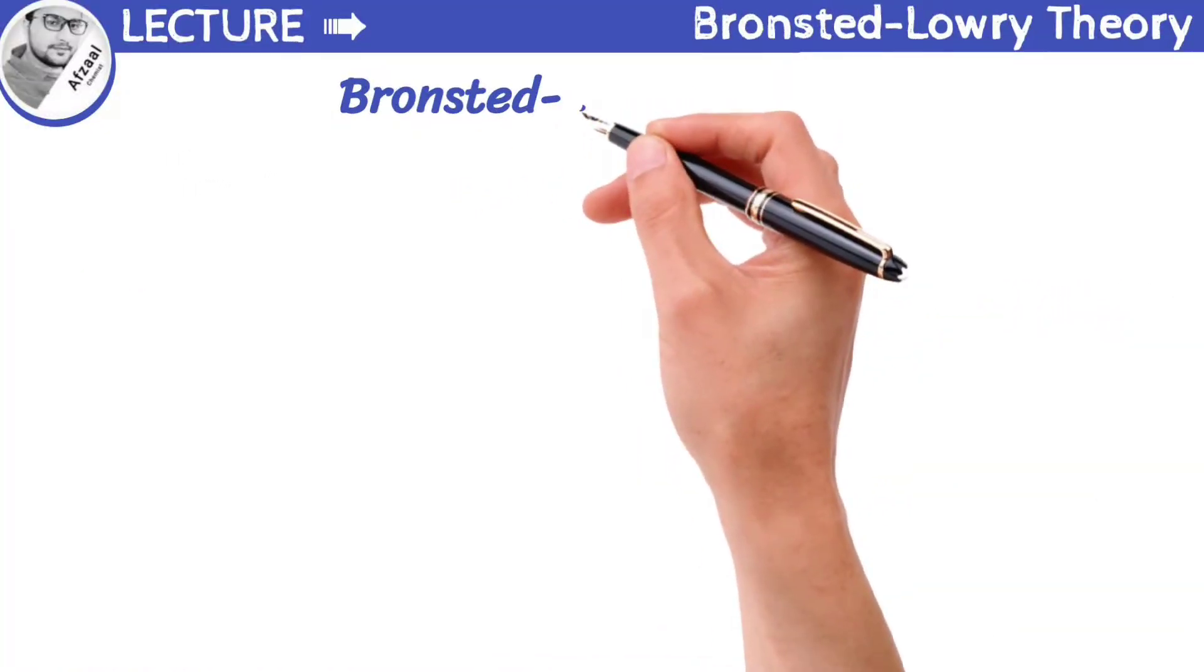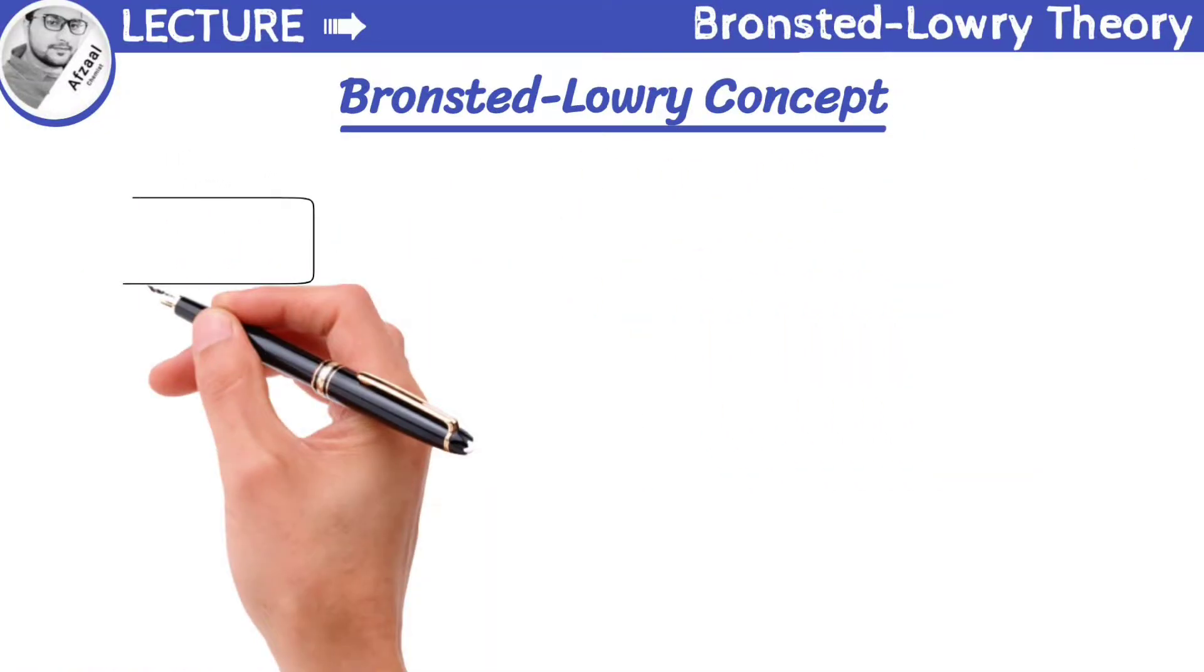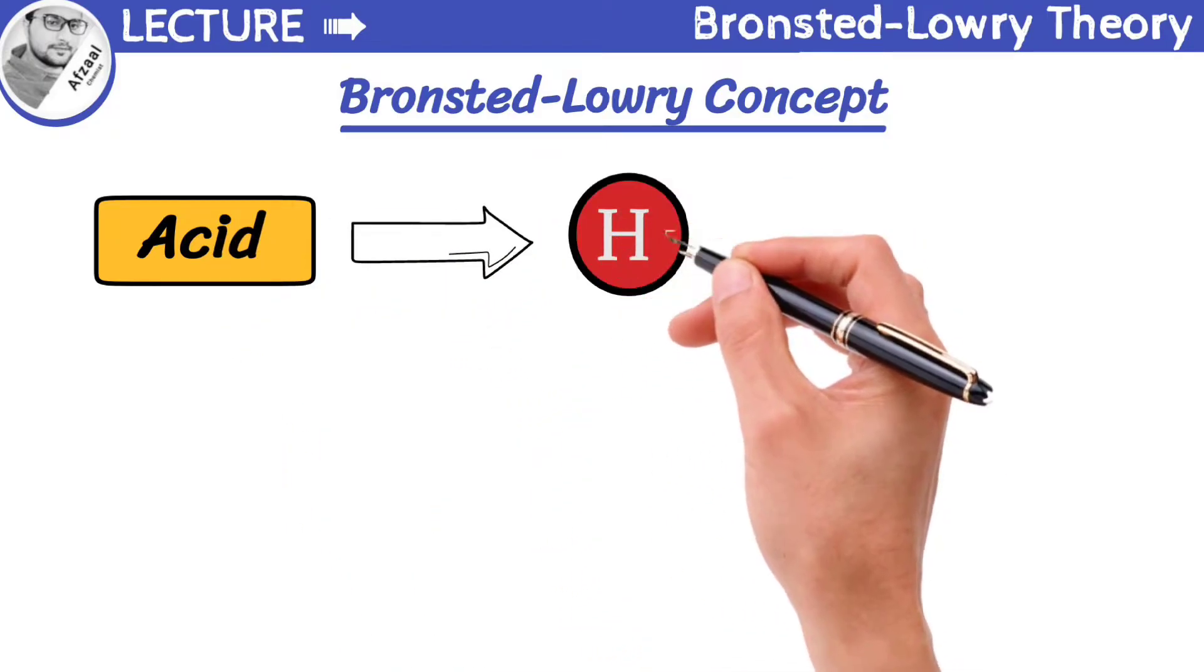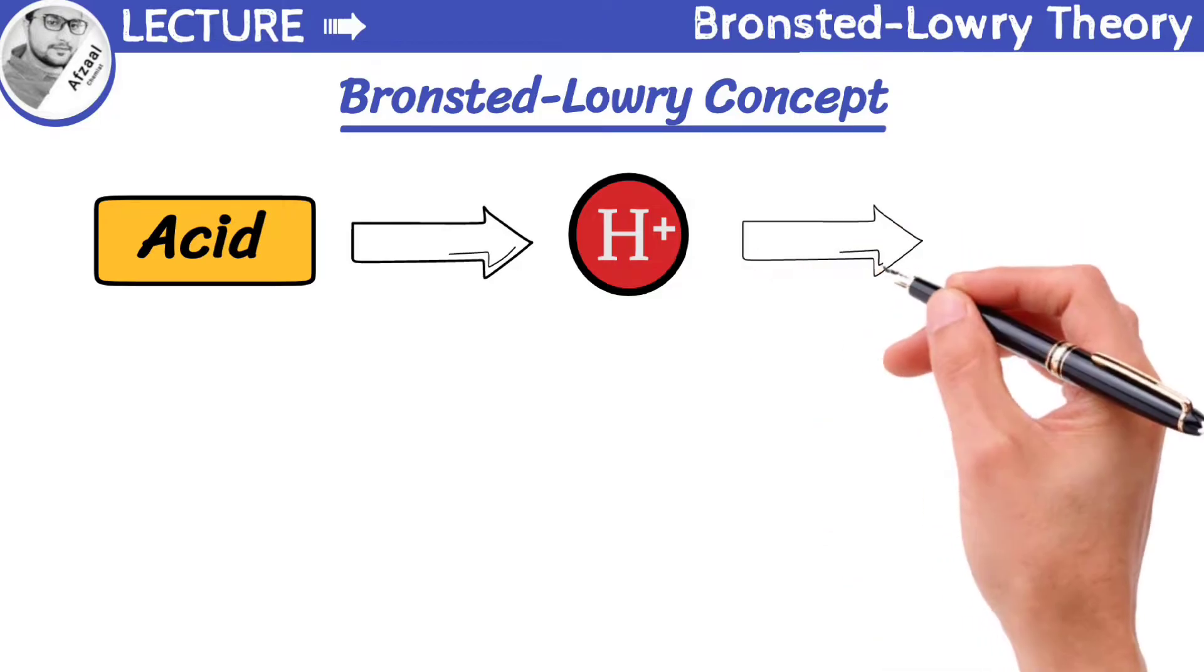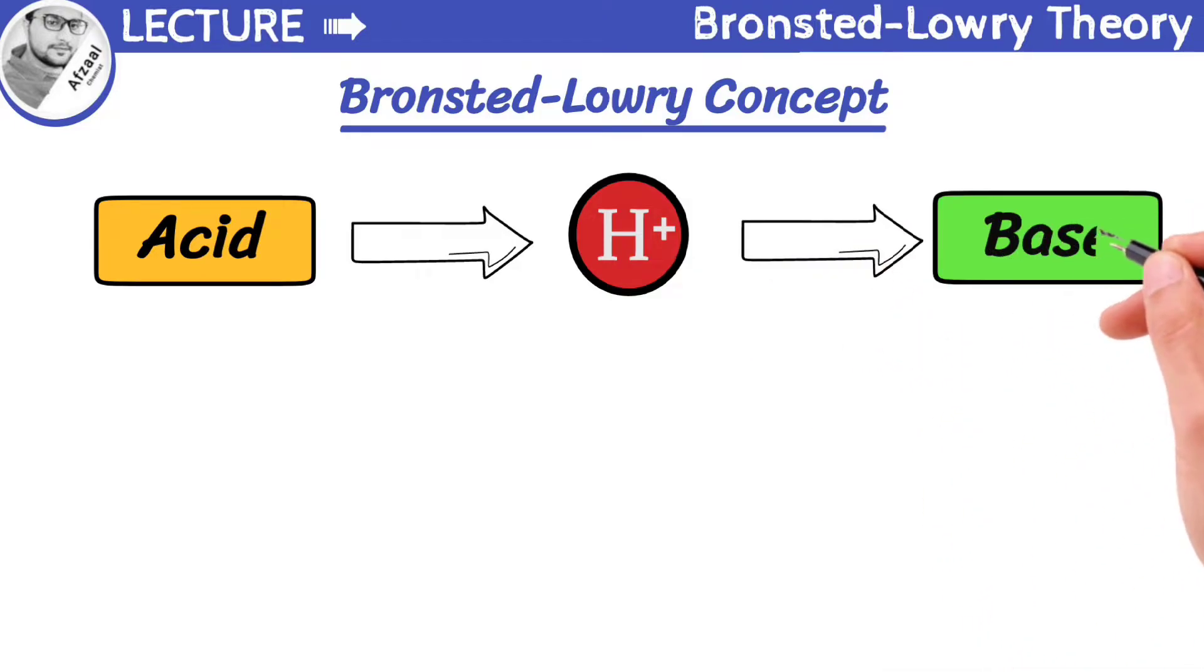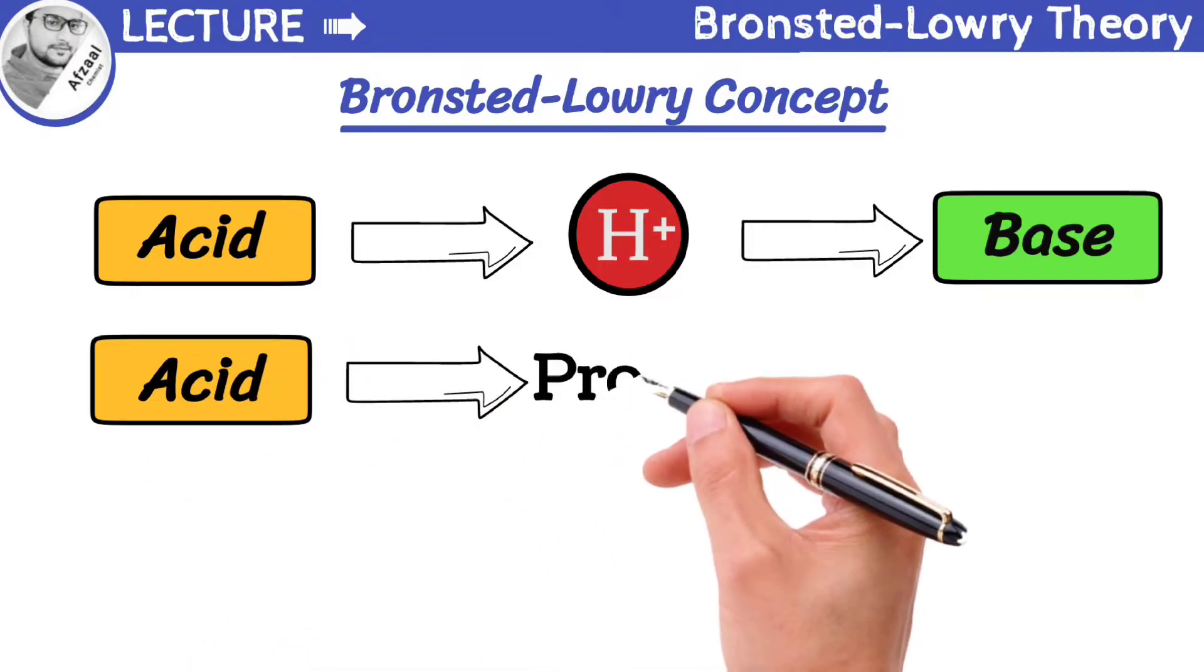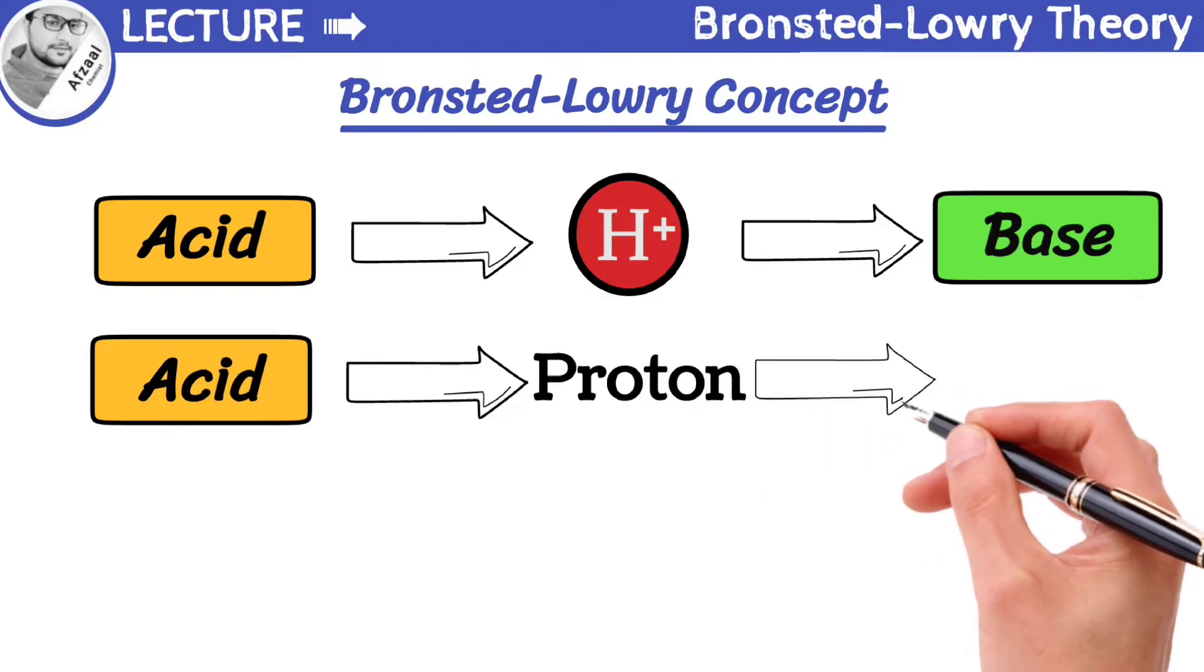According to this concept, an acid is a substance that can donate H+ ion to another substance. On the other hand, a base is a substance that can accept H+ ion from another substance. It can also be defined as an acid that donates a proton, while a base is a substance that accepts a proton.